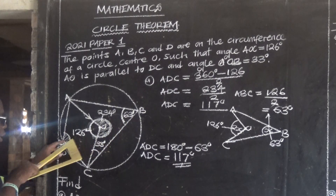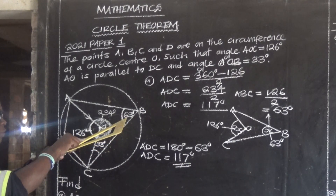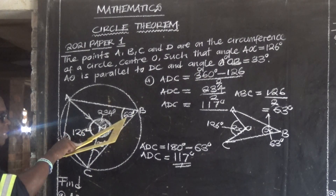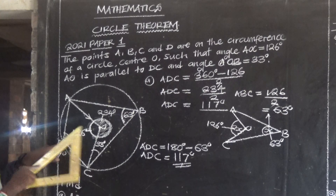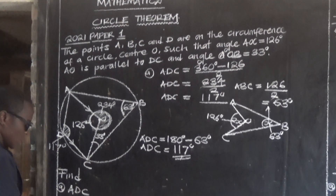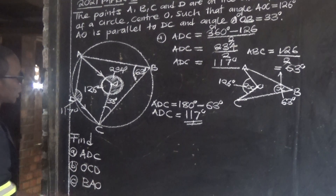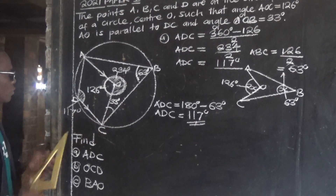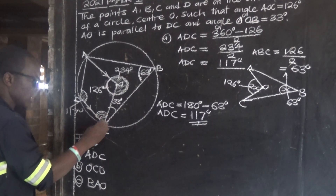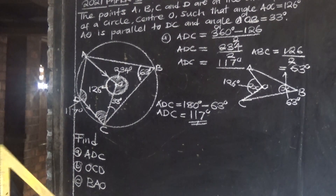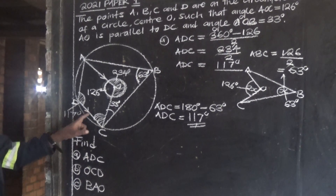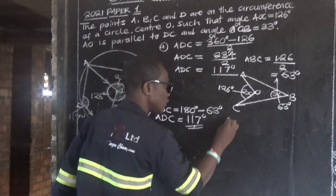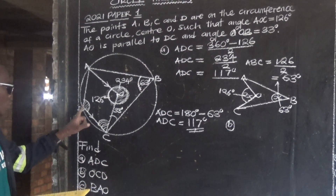These two opposite angles of a cyclic quadrilateral add up to 180 degrees. So if you know one, subtract it from 180 to find the other. Now let us find angle OCD. We are going to utilize the parallel lines given.